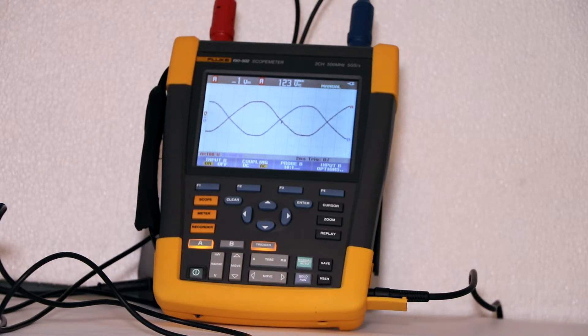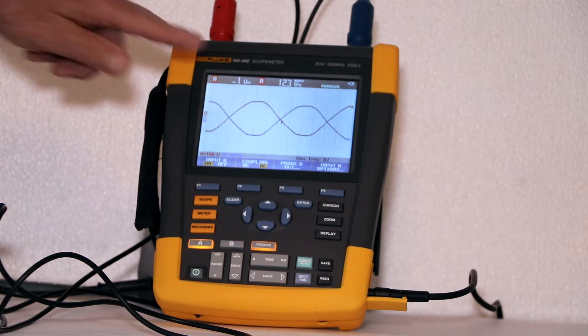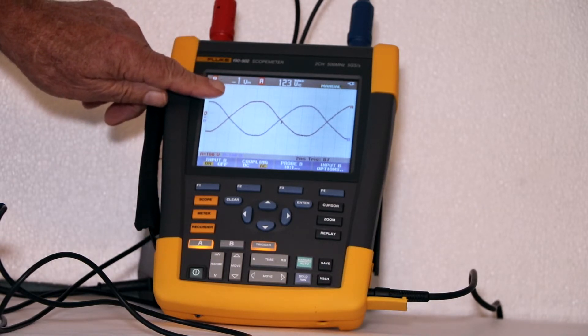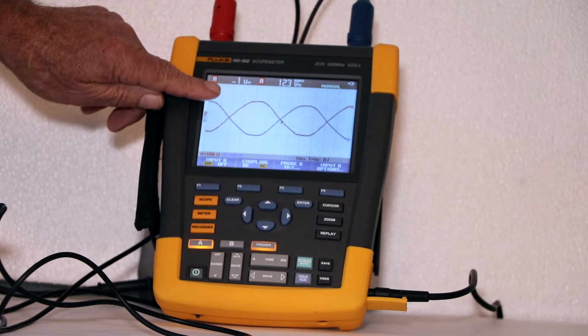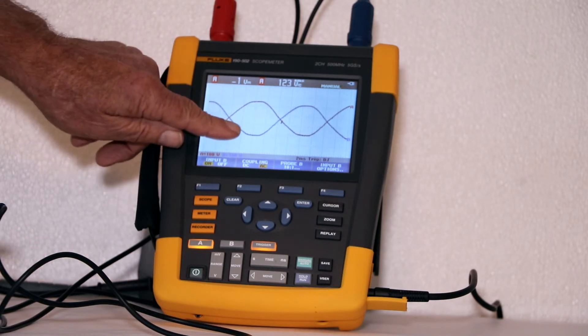With both probes connected in this manner as you can see the two waveforms that are 180 degrees out of phase are shown in the display. Notice that the positive peak of channel A coincides temporally with the negative peak of channel B.